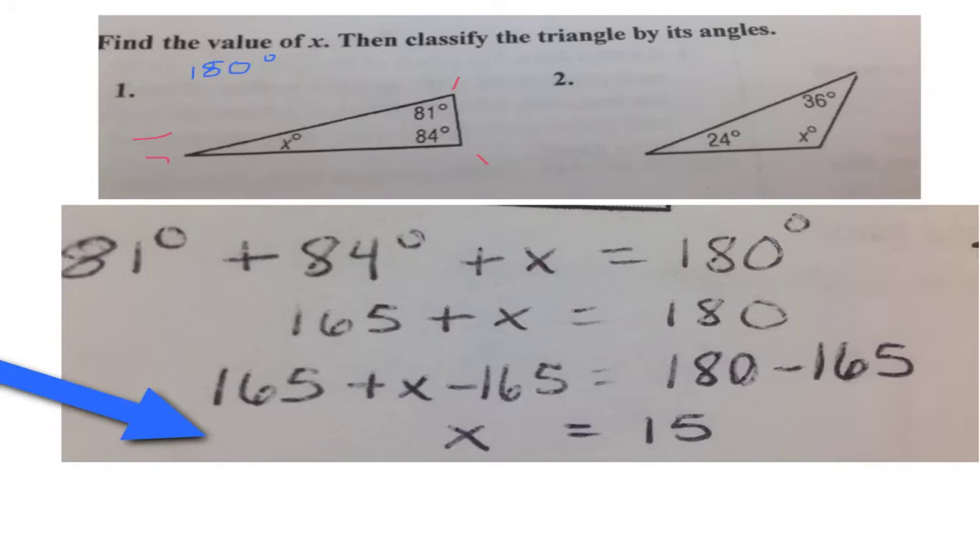The next part of the question said classify the triangle by its angles. We know that acute triangles have three angles less than 90 degrees. So, in this case, I have an 81, an 84, and a 15.